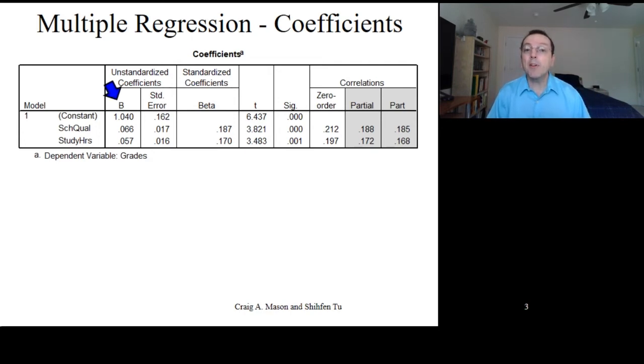We then have the values for the unstandardized regression coefficients for each of the predictors, plus the intercept, and these are the values for our b0, b1, etc. Next to the unstandardized regression coefficient is the standard error for that regression coefficient, which is then followed by the standardized regression coefficient, or the beta.